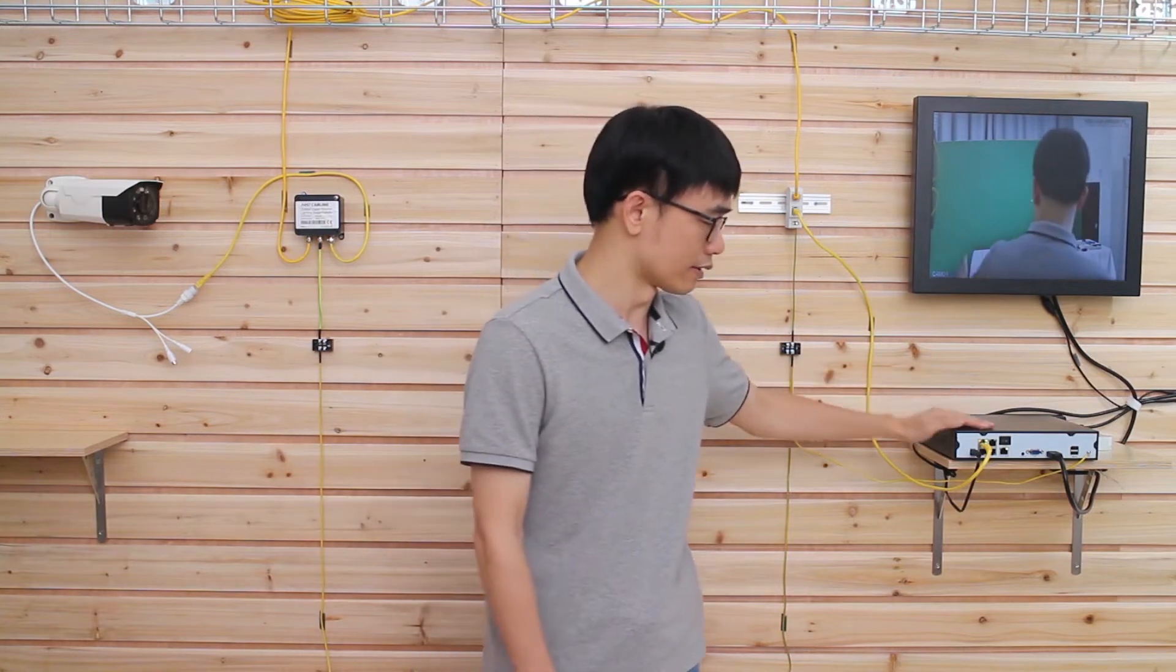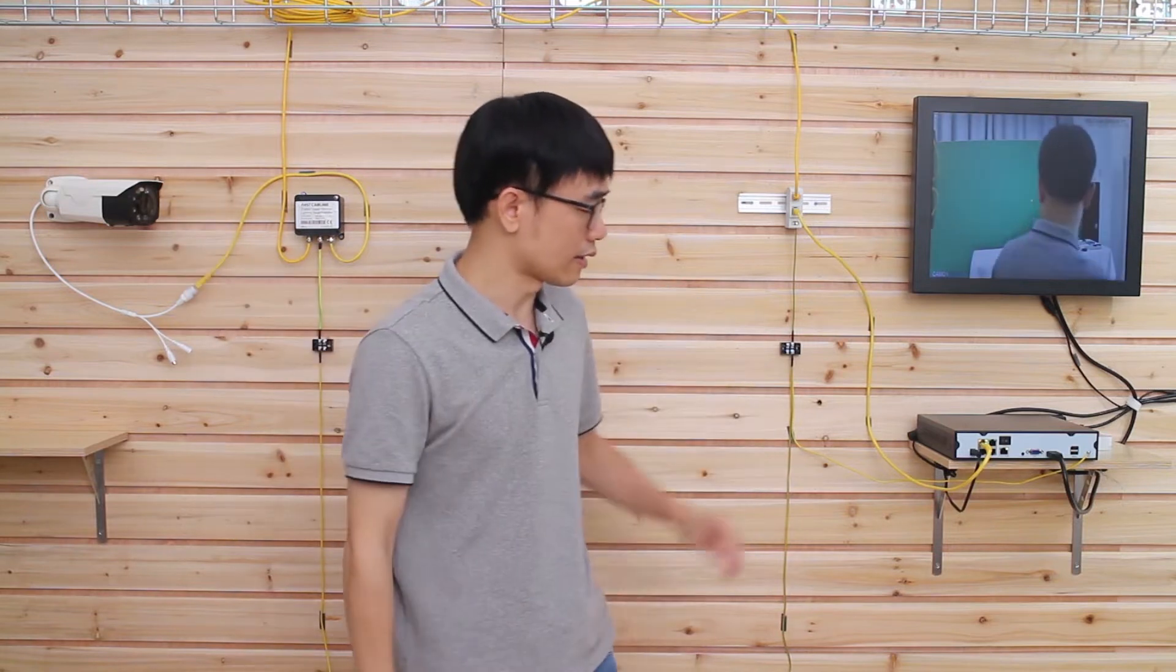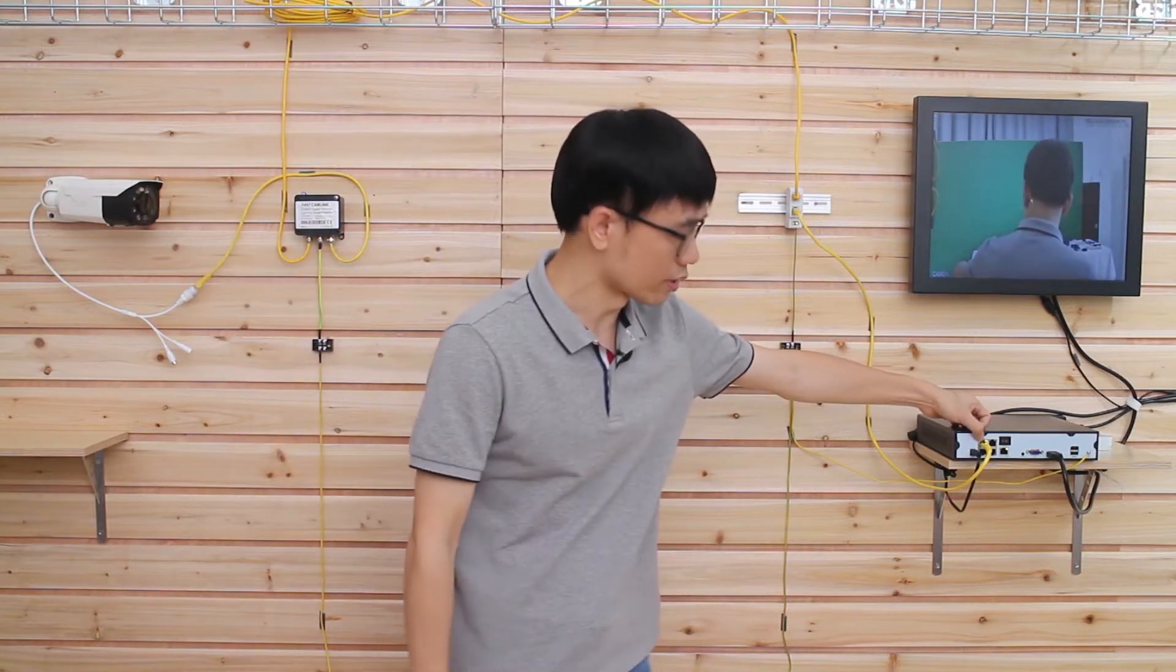Here we have the system set up. This is a very typical IP camera system. This is a PoE NVR and we also have the IP camera which is live now. The camera is connecting to port number one, the PoE port. The PoE is supplying both power and data to the camera.